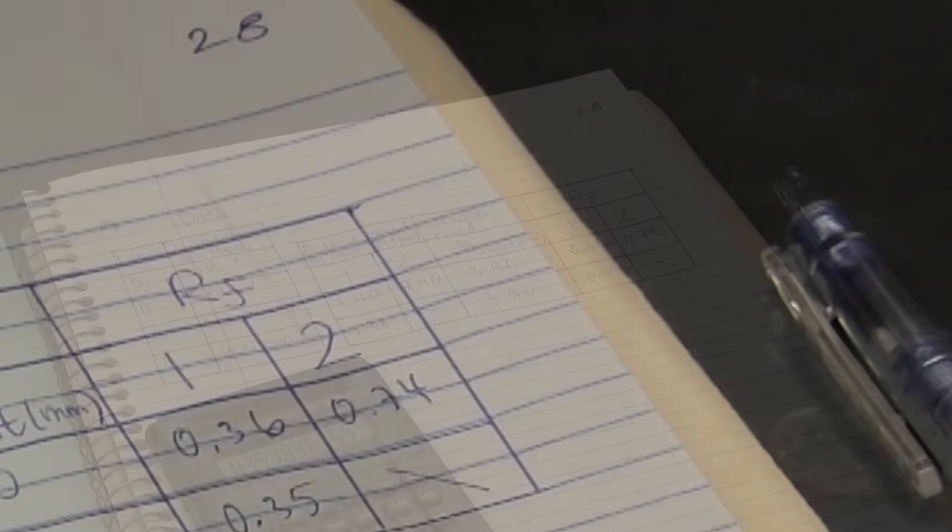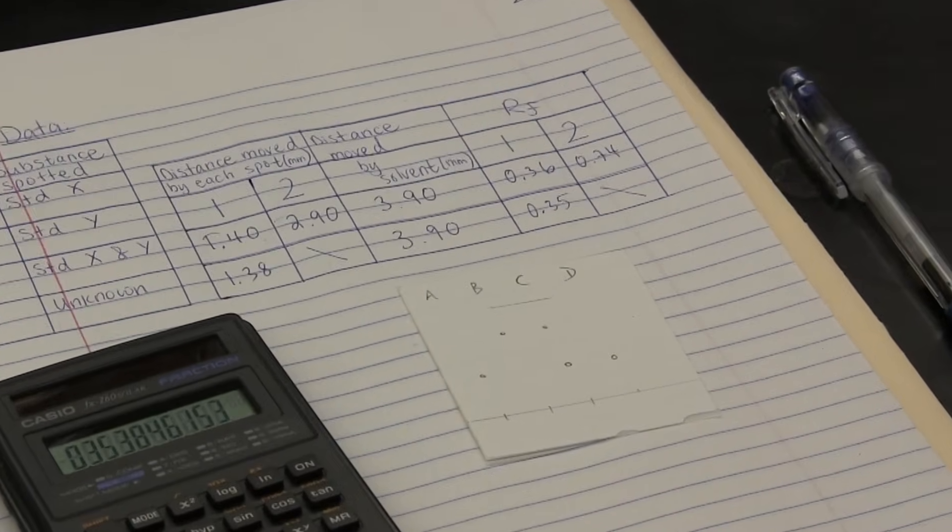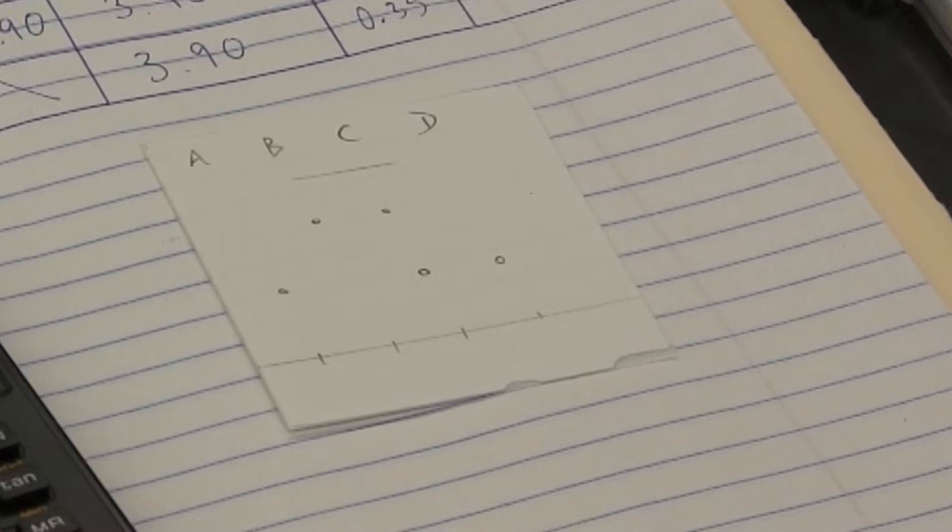The closer the RF value of an unknown is to the RF value of a standard, the greater the chance that the unknown is the same as the standard. This is what allows us to identify unknowns in mixtures by comparing RF values of the unknowns with those of standards. It's unlikely that RF values of analytes will exactly match those of the standards to the second decimal place. This is due to combination of experimental error arising from various factors including measurement uncertainties and inconsistencies in the TLC plate.